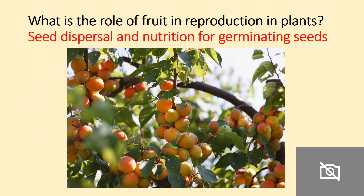The role of fruit in reproduction in plants is basically to help with a couple of things. Firstly, seed dispersal — if a small animal eats the fruit it will also eat the seeds, then the animal will move and defecate and the seeds will have a different area to start germinating. It also provides nutrition: if the fruit falls on the floor and isn't eaten by anything, the energy within the fruit will be broken down and incorporated into the soil.